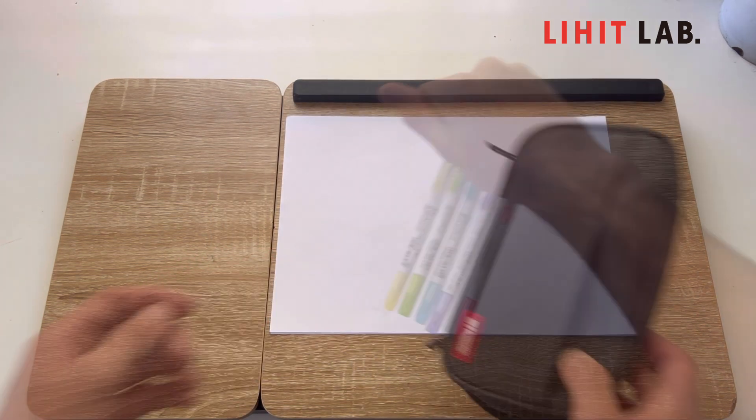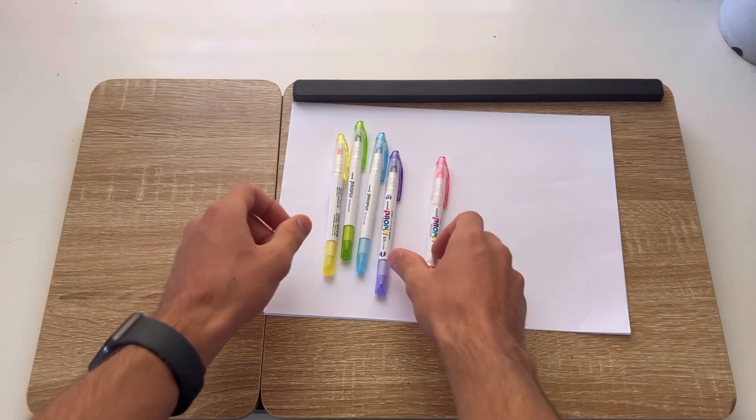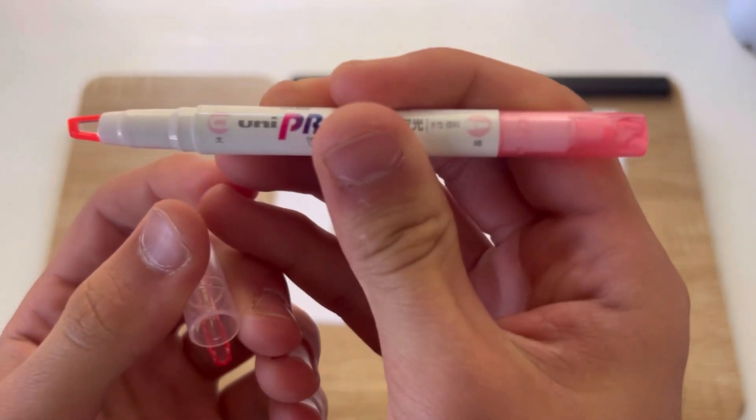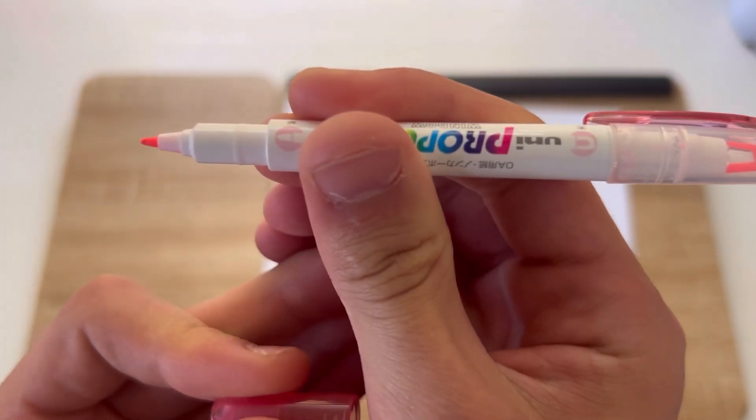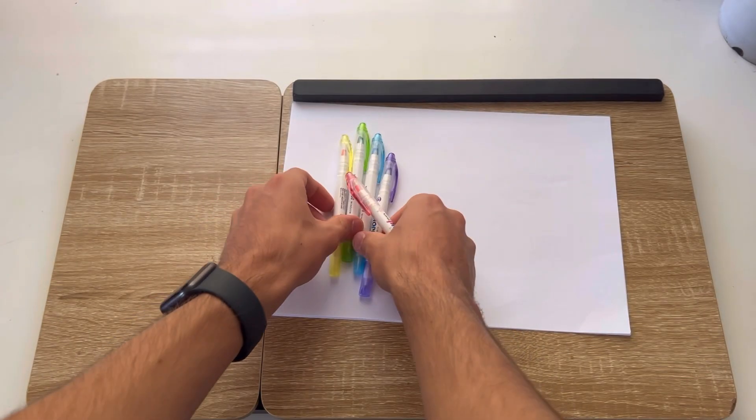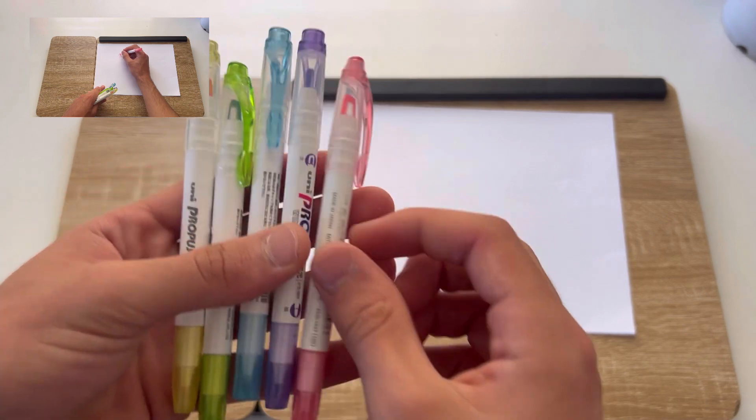Next are my highlighters. I use the Propus window highlighters from the Mitsubishi Pencil Company. I like these because they have one thick side and one thin side, meaning that it's easier to make different sized lines. I usually use these five colors, since they are not too similar to each other, but still in the same color scheme.